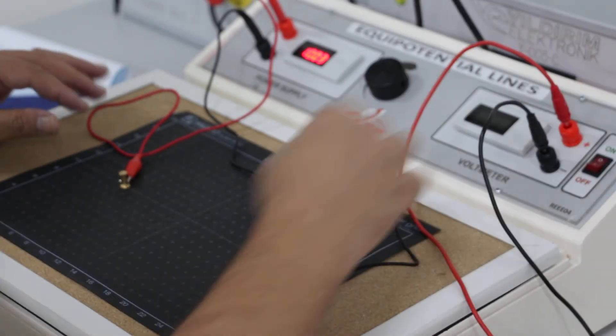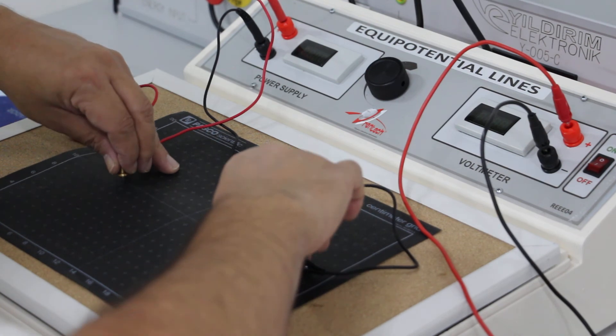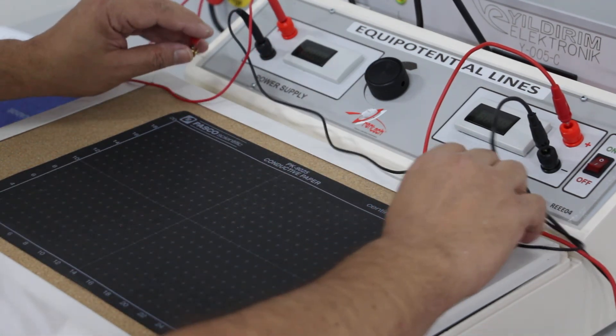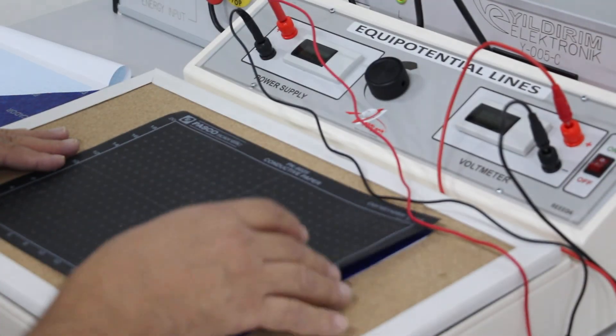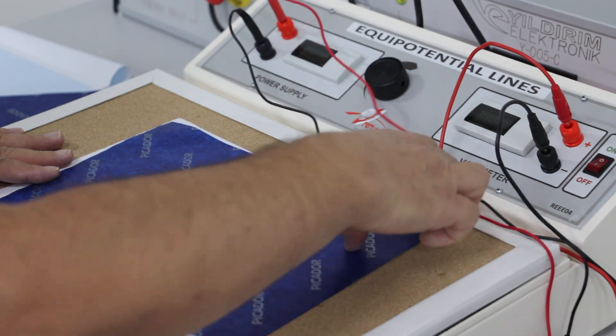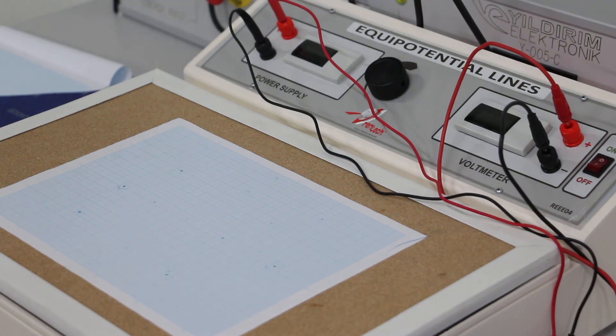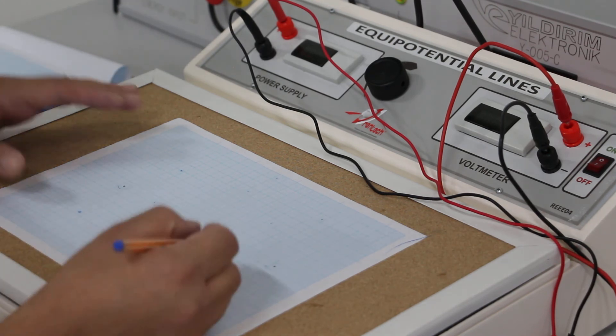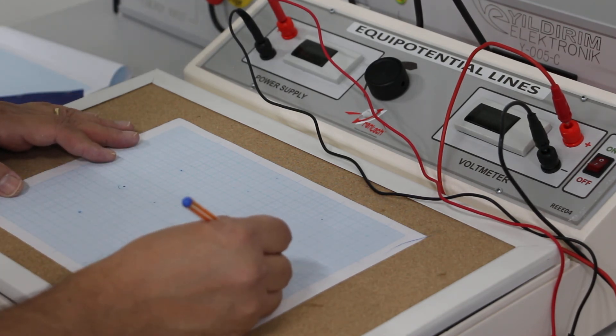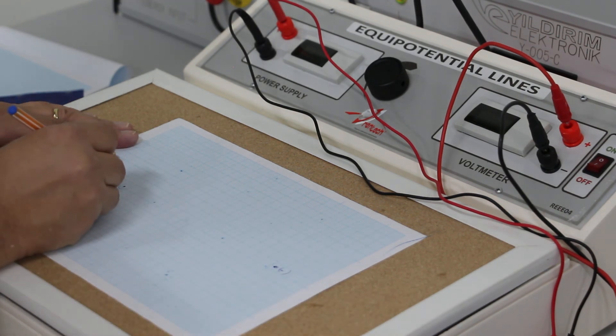Now I'll turn off the equipment lines panel and try to see the lines here. Here I'll draw the equal potential lines map. This is minus point. This is plus point.